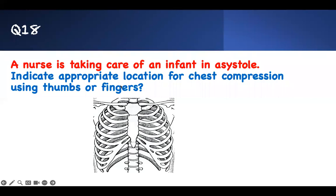Number eighteen: A nurse is caring for an infant in asystole. Indicate the appropriate location for chest compressions using thumbs and fingers. Look for the lower third of the sternum — not the upper third. The nipple line is at approximately the fourth intercostal space. Just below the nipple line is where you compress. If you put it too high, you're wrong — it is the lower third, just below the nipples, where you push with your thumbs or fingers for infants.